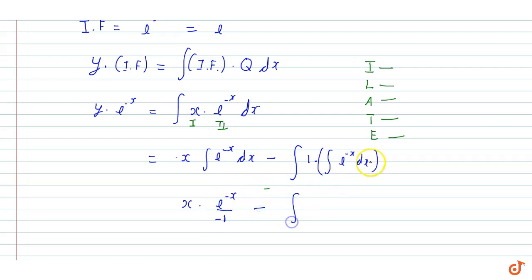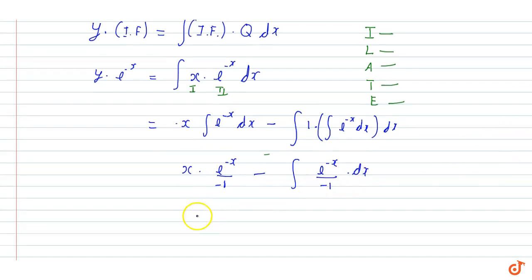Integration of e to the power minus x upon minus 1 is e to the power minus x upon minus 1. So the value is x times e to the power minus x upon minus 1 minus e to the power minus x, because minus 1 and minus 1 multiply to equal 1.